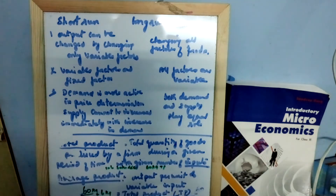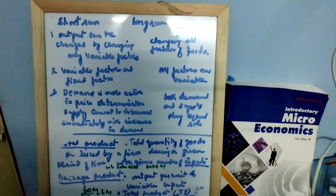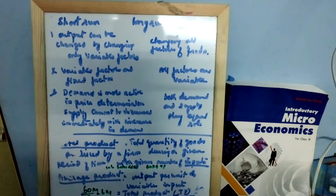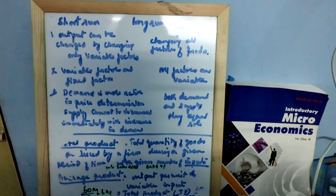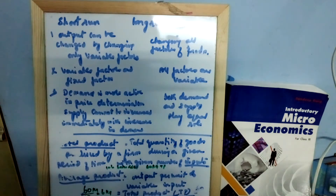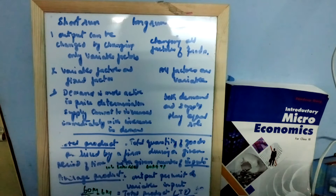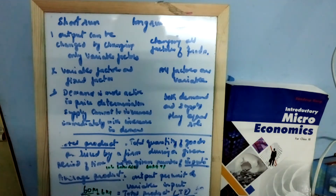In short run, it uses both variable factors and fixed factors. Fixed factors include machinery and land, whereas variable factors include labor and raw materials. In long run, all factors are variable because you can increase the factory site, buy more machinery, change the technology, employ more labor, and use more raw materials.